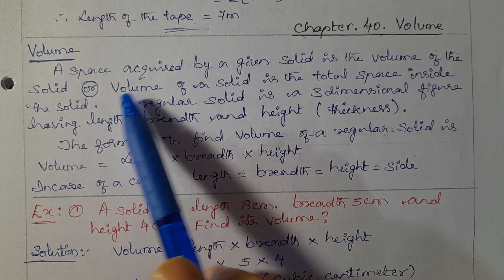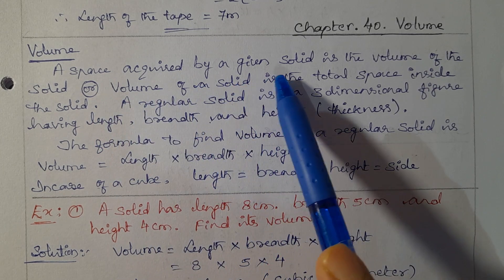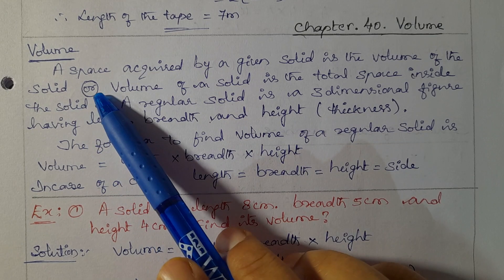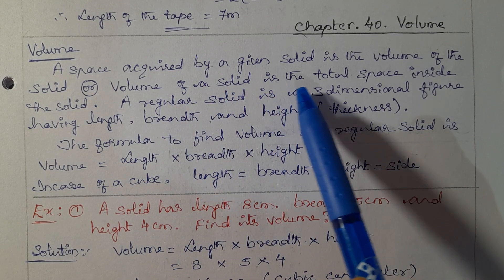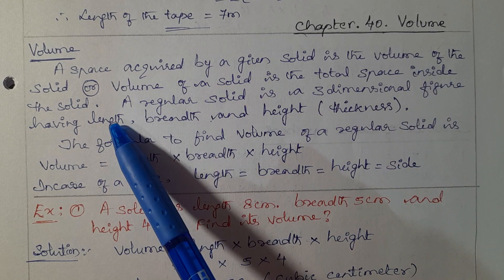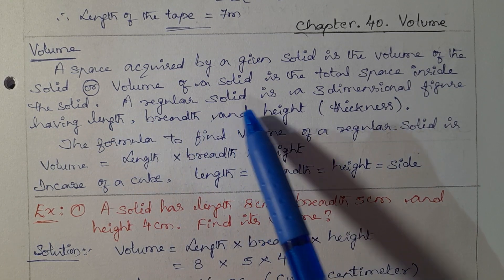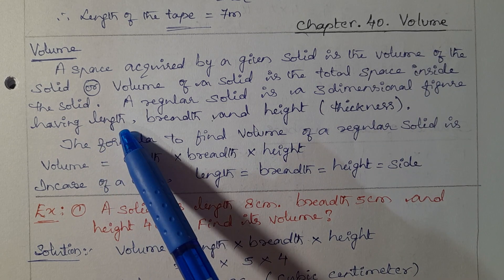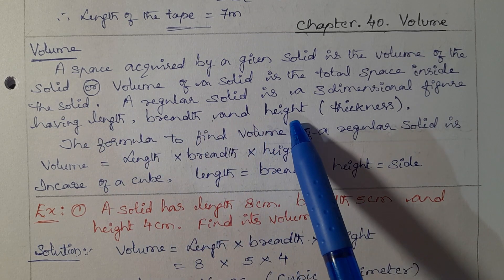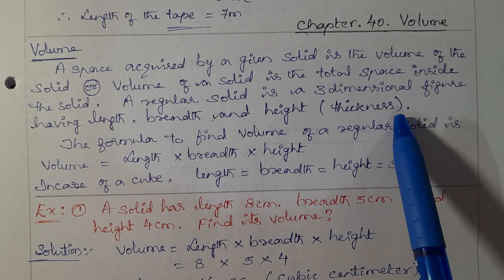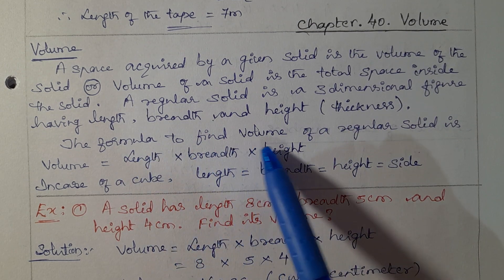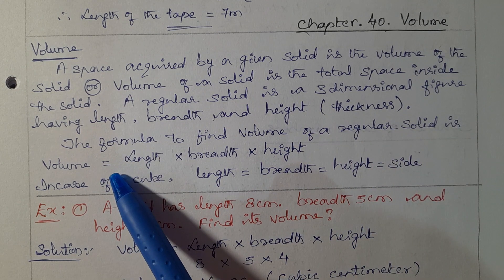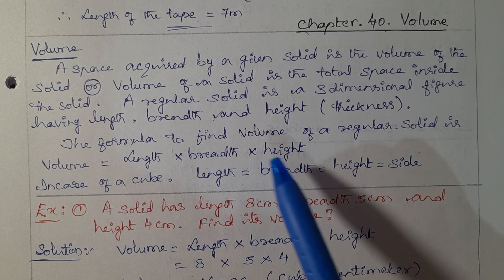Volume — the space acquired by a given solid is the volume of the solid. Or, the volume of a solid is the total space inside the solid. A regular solid is a three-dimensional figure having length, breadth, and height — it means thickness. The formula to find the volume of a regular solid is: Volume = Length × Breadth × Height.